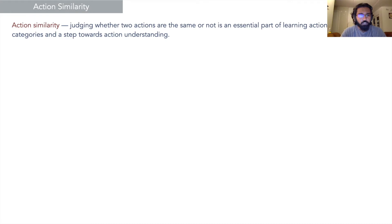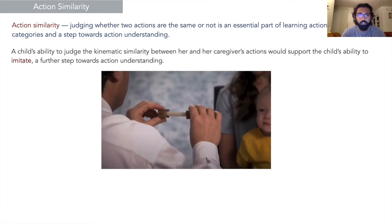This work focuses on action similarity—judging whether two actions are the same or not. In most behavioral studies, action similarity has been used as a measure to understand action primitives, action semantics, or even imitations. Therefore, it forms an essential part of learning action categories and action understanding.